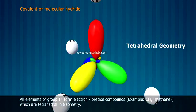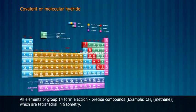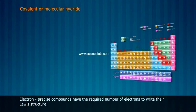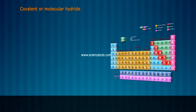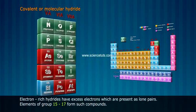Example: CH₄ (methane), which is tetrahedral in geometry. Electron precise compounds have the required number of electrons to write their Lewis structure. Electron rich hydrides have excess electrons present as lone pairs; elements of groups 15-17 form such compounds.